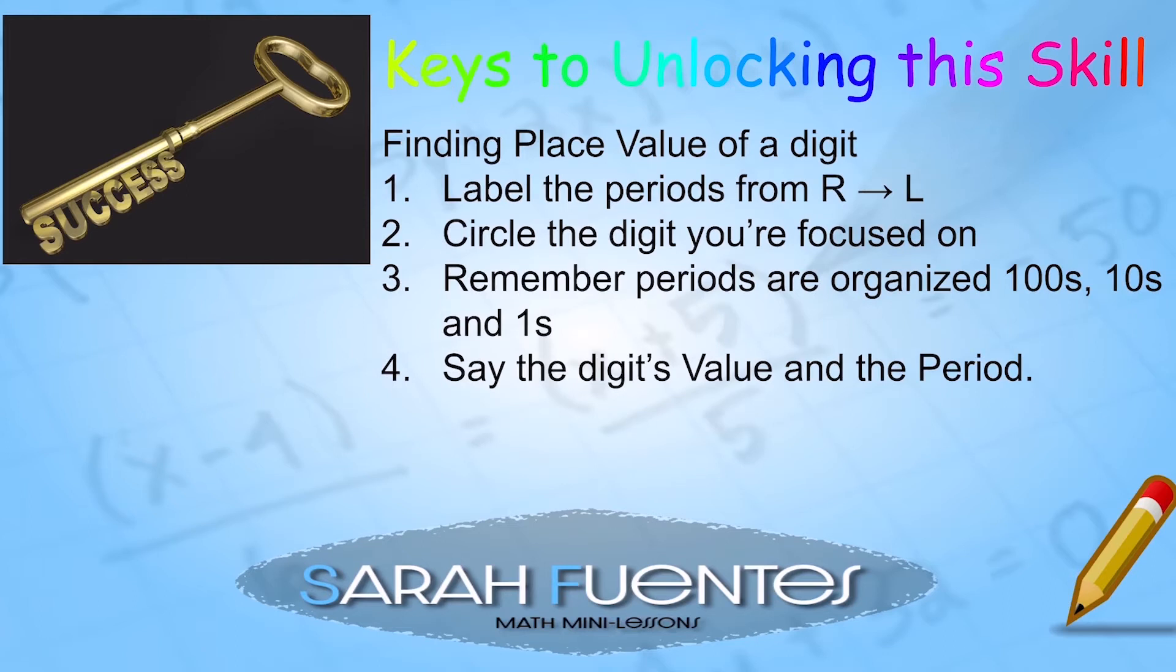Here are the steps for finding place value of a digit. One: we're going to label the periods from right to left again, starting with the ones and then moving to thousands and so on. Two: we're going to circle the digit we're focused on. Three: we're going to remember the periods are organized into hundreds, tens, and ones. If you need to write that down, please do. And four: we're going to say the digit's value in that period.